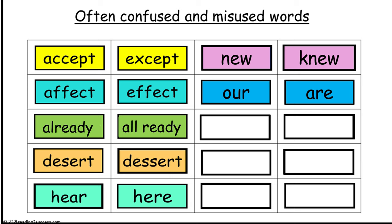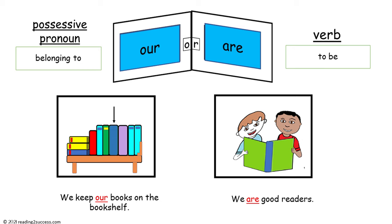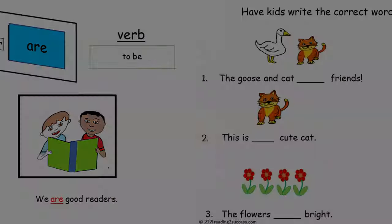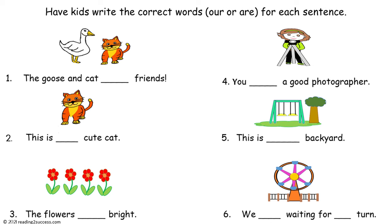Our seventh pair of often confused and misused words are our and are. Our, spelled O-U-R, is a possessive pronoun meaning belonging to, as in 'we keep our books on the bookshelf.' The second word, are, spelled A-R-E, is a verb meaning to be, as in 'we are good readers.' Have kids write the correct word — our or are — for each sentence.